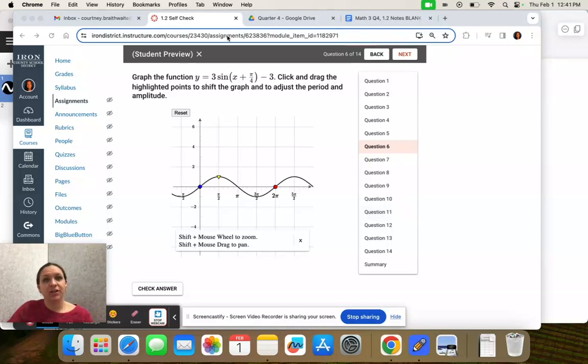All right, question six, we are going to graph y = 3sin(x + π/4) - 3.